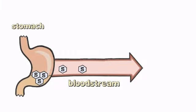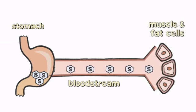In a normal digestive process, sugar travels from the stomach, through the bloodstream, to your body's muscle and fat cells.